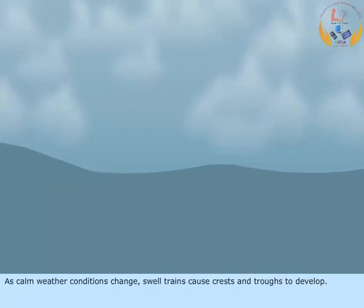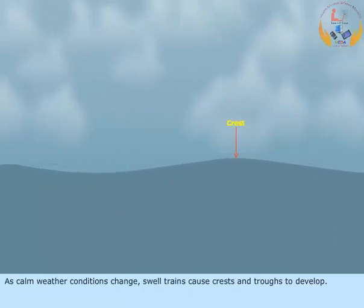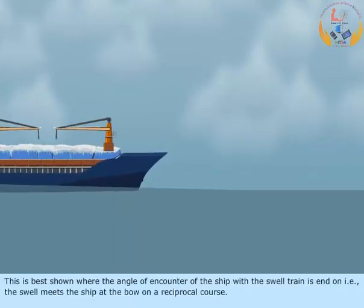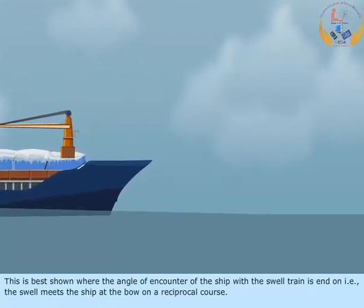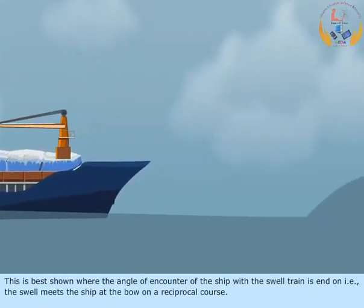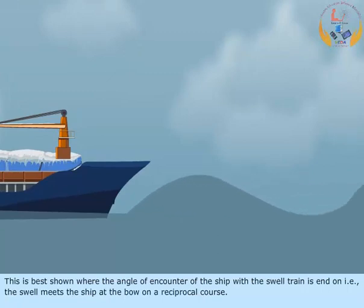As calm weather conditions change, swell trains cause crests and troughs to develop. This is best shown where the angle of encounter of the ship with the swell train is end on — that is, the swell meets the ship at the bow on a reciprocal course.